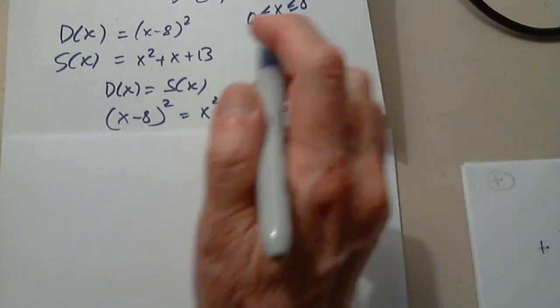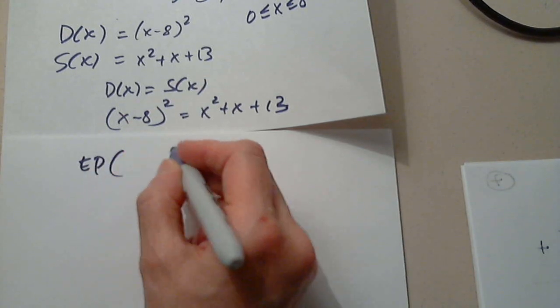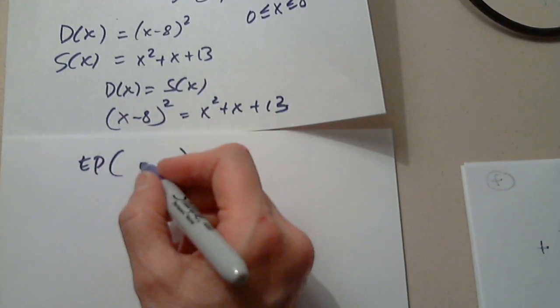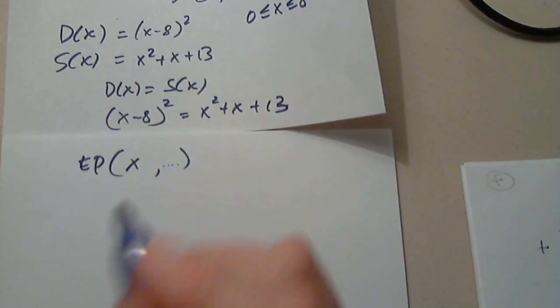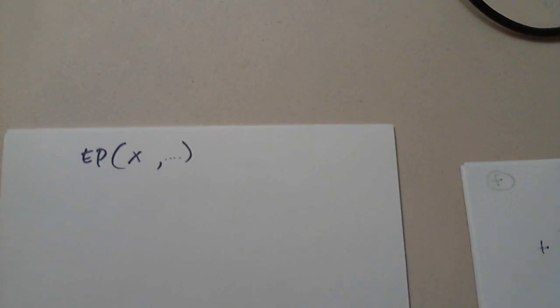Again, this is from way before calculus. The equilibrium point means the demand equals the supply. And you set them equal to each other. Is that good enough, or should I continue? Yeah. That's good enough. And then you square, you find, and remember the equilibrium point is a point. From here you find x, and then you plug it in, it doesn't matter which one, and you find the y value. Okay.